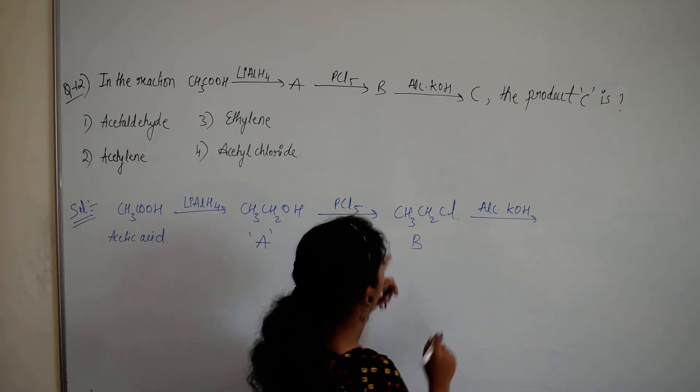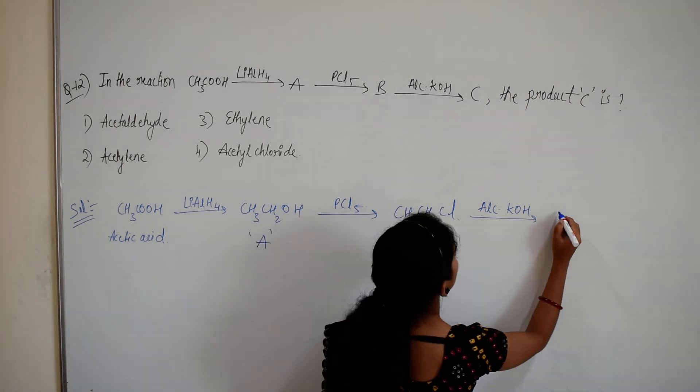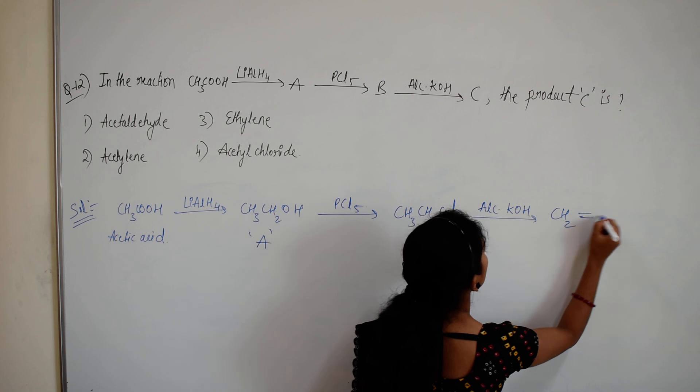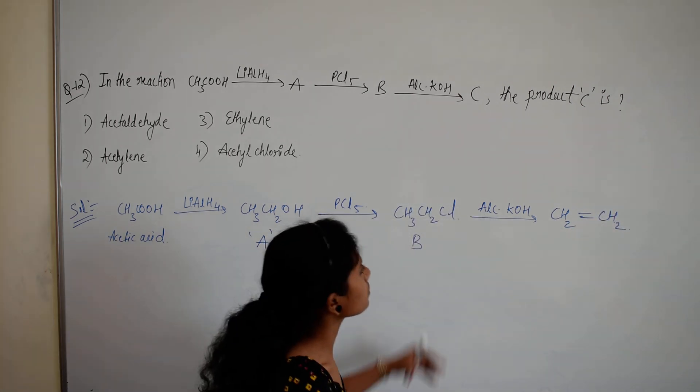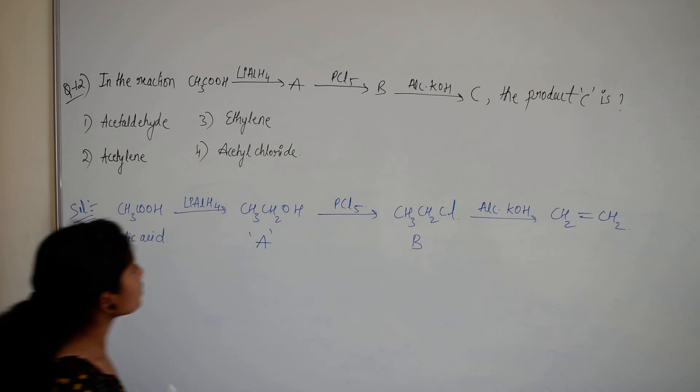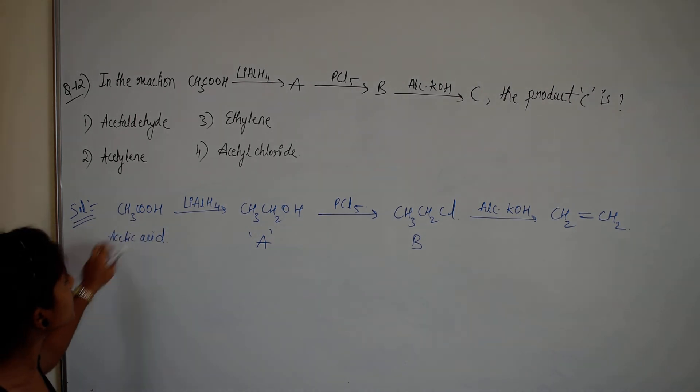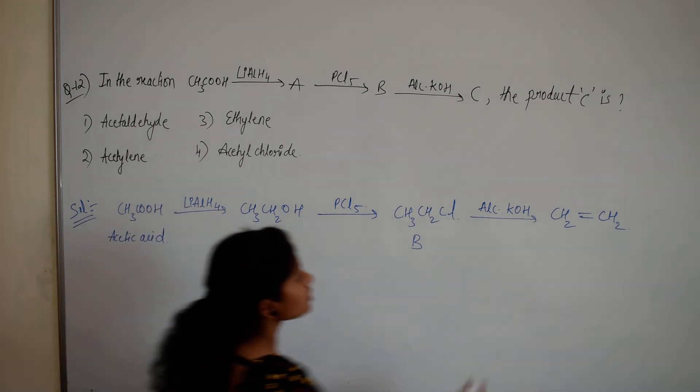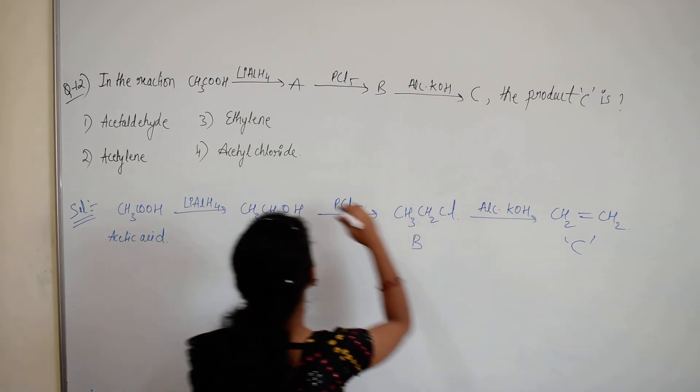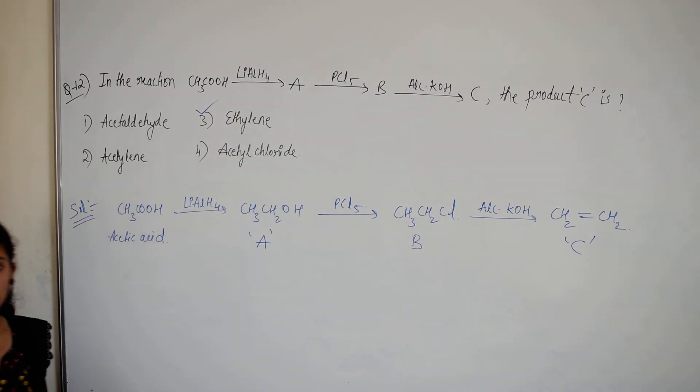We get CH2=CH2. So the answer is ethylene. The product is ethylene.